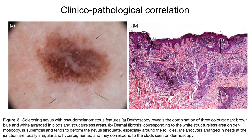This case shows a white structureless area with clods, and we can observe the histopathological correlation where it is possible to see the junctional alteration mimicking a dysplastic nevus, the dermal fibrosis, and in the depth the dermal nest.